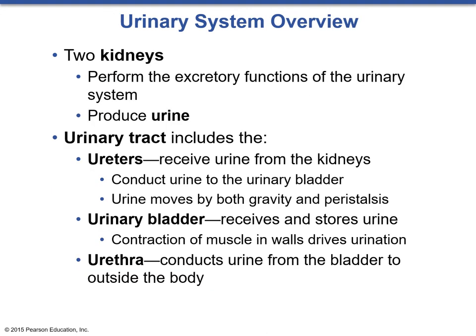Looking at a basic overview of the urinary system and its gross anatomy, we can see that the urinary system consists of two kidneys, two ureters, a bladder, and a urethra. The kidneys perform the excretory functions of the urinary system and actually produce urine by filtering blood. The urinary tract consists of the ureters — paired tubes, one from each kidney — which lead down to the urinary bladder, which receives and stores urine. The urethra conducts urine from the bladder to the outside of the body.